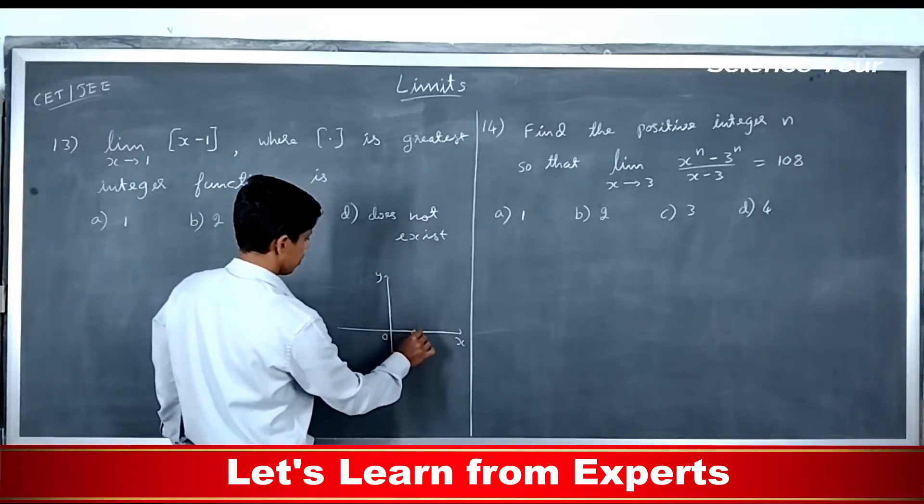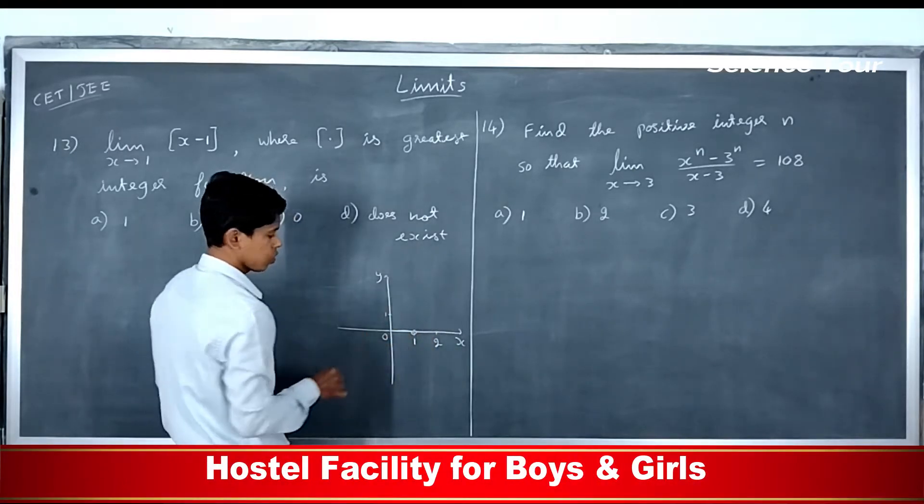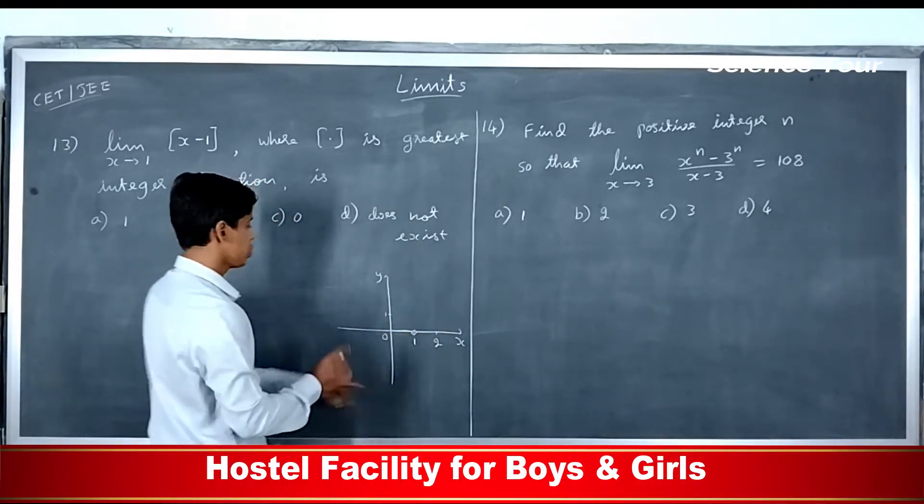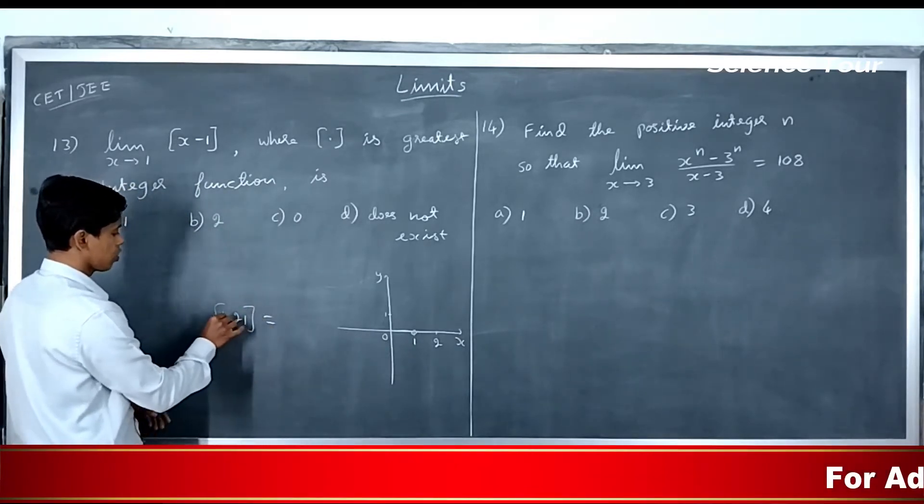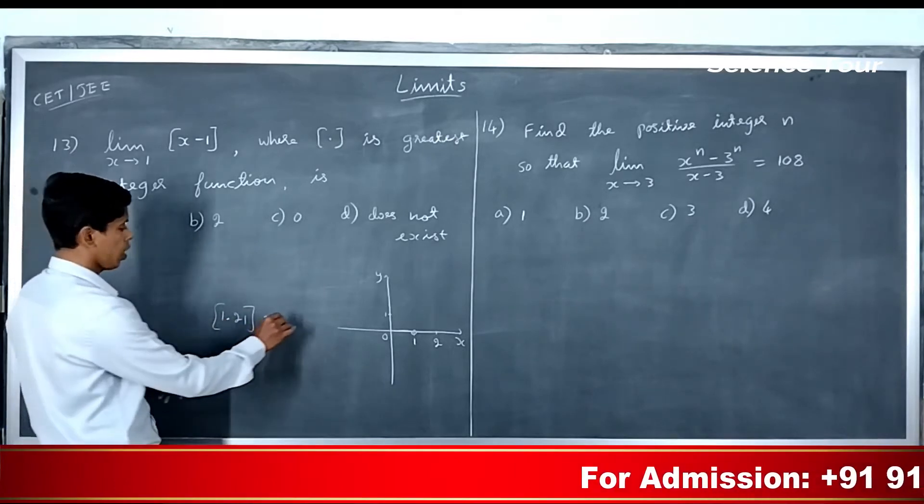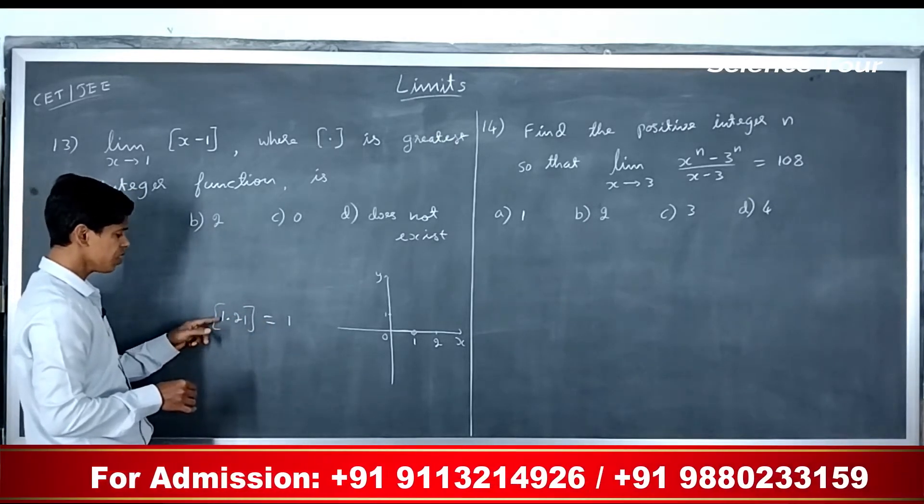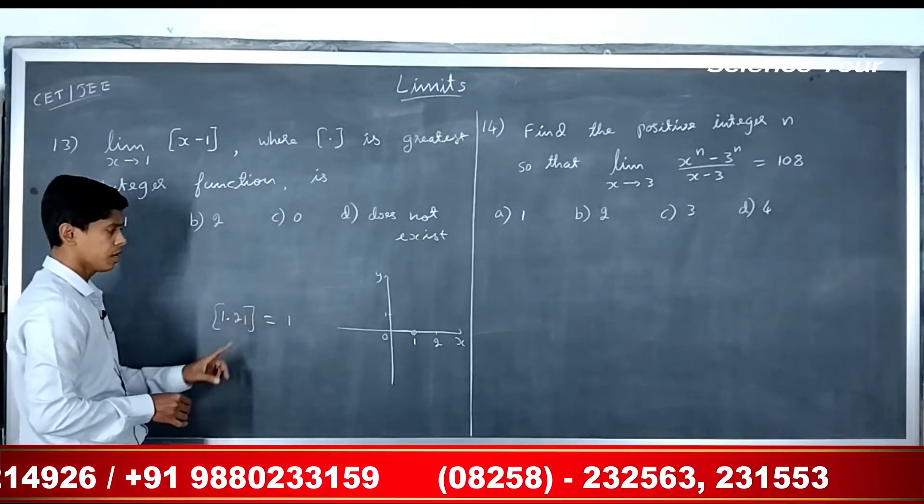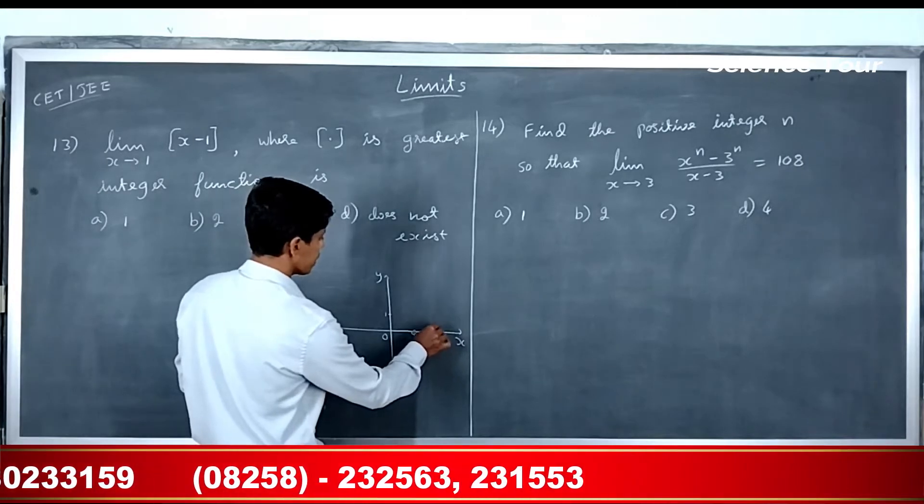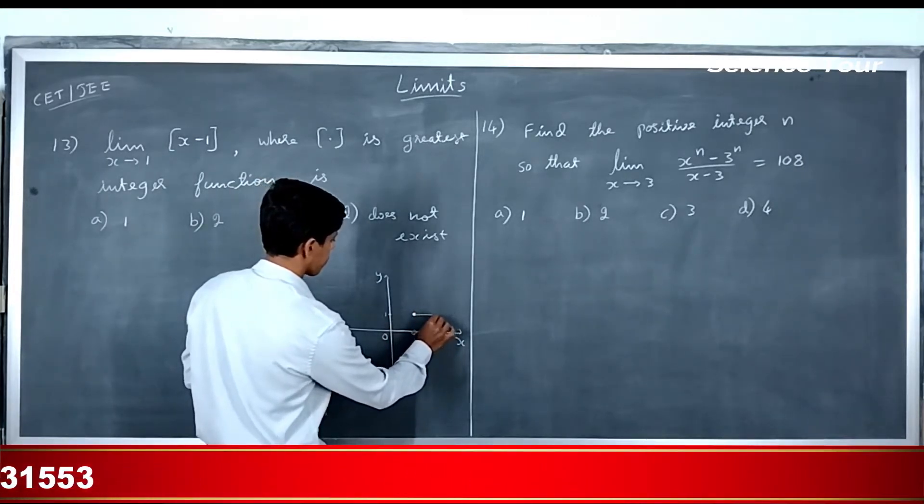Then from 1 to 2, if you have 1.1, 1.2 and all, what is 1.21? What is the greatest integer out of this? Greatest integer is 1. And if you have 1.5, it's 1. 1.999, it's 1. So till 1.999 you will have 1.